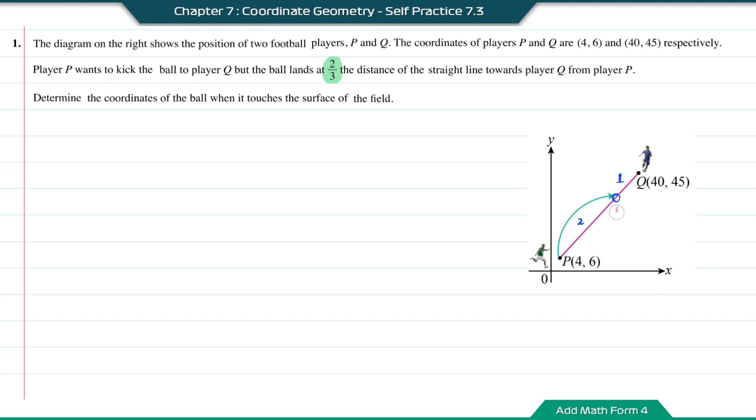Let's say I label the position of the ball as R, so the ratio PR to RQ will be equal to 2 to 1.